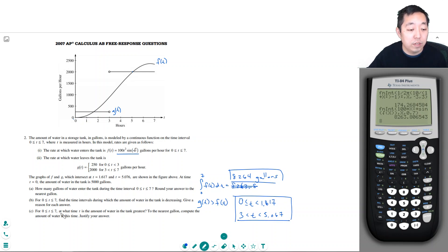For 0 to 7, at what time t is the amount of water in the tank the greatest? To the nearest gallon, compute the amount of water at this time. So for c, I'm going to do this up here. We have to check any local extrema as well as the endpoints. So my checkpoints are, let's find any local extreme values.